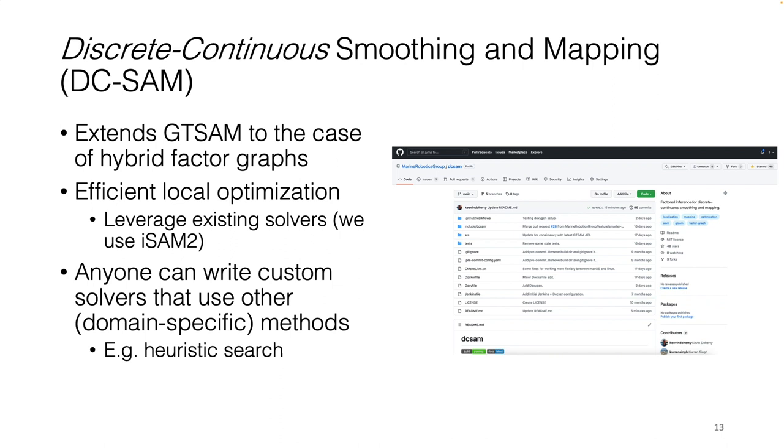These are the problems that we aim to address with our work on discrete continuous smoothing and mapping. First, our library, DC-SAM, extends GTSAM to the setting of hybrid factor graphs, allowing you to model discrete continuous optimization problems.